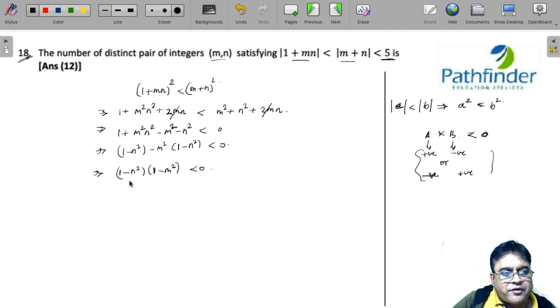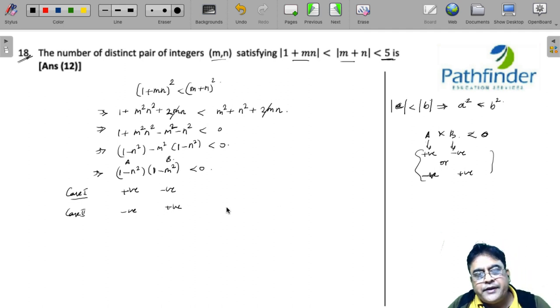We use the same information here. Let this be a and this be b. Case 1 will be a is positive while b is negative. In case 2, a is negative while b is positive.